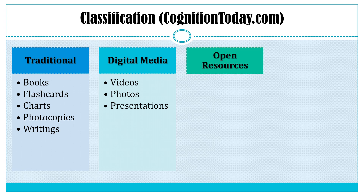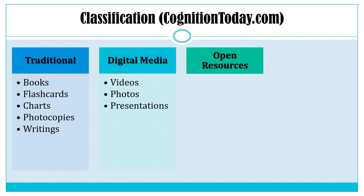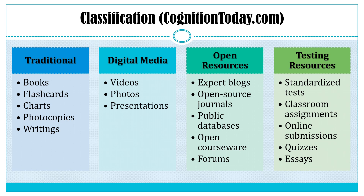The third classification is open resources that include expert blogs. For science lessons, there are many scientific reports which we can find from expert blogs and open source journals and integrate in our science lessons even for grade school learners. We also have public databases and forums where intellectual discussions can be found. Lastly, there are testing resources which facilitate assessment processes inside the classroom. We have standardized tests, classroom assignments, online submission, quizzes, and essays.